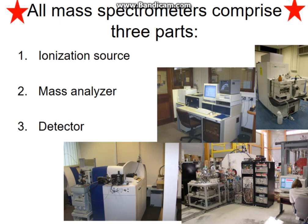All mass spectrometers comprise three parts — note the red stars. There's the ionization source, where the ions are generated; the mass analyzer, where the ions are separated according to their mass-to-charge ratio; and the detector, where the ions are detected. There are many different types of mass spectrometer using different electric or magnetic fields to separate ions and different ways to generate and detect ions, but they all share these three fundamental parts.